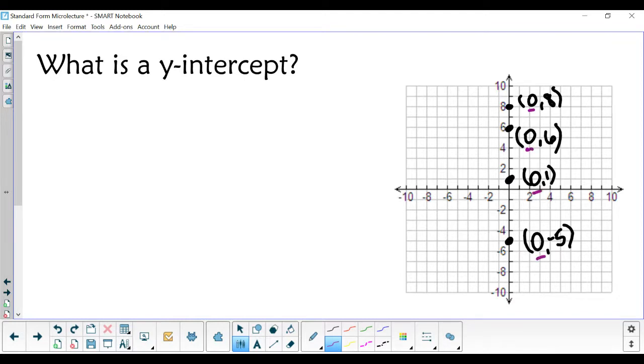So if we are looking for the y-intercept of a graph, we will substitute 0 for x into our equation and solve for y.